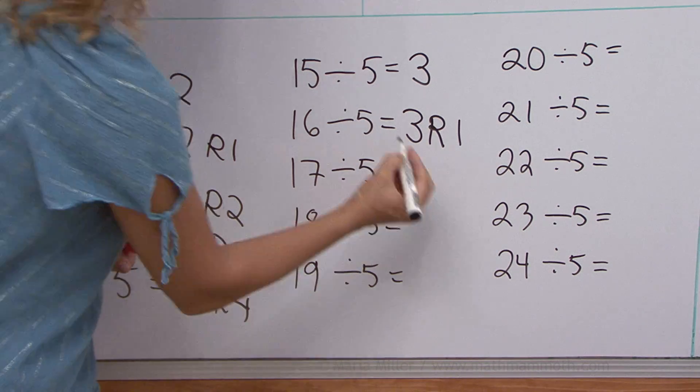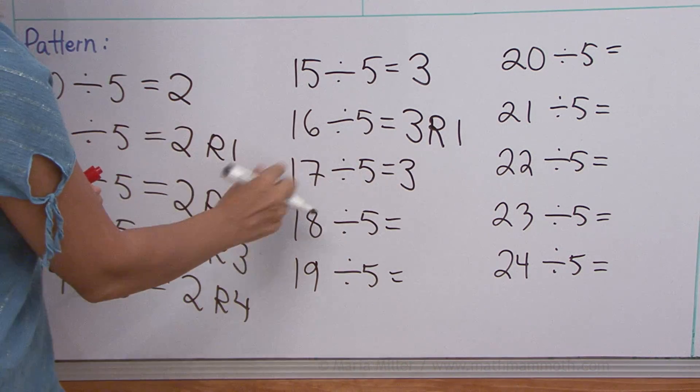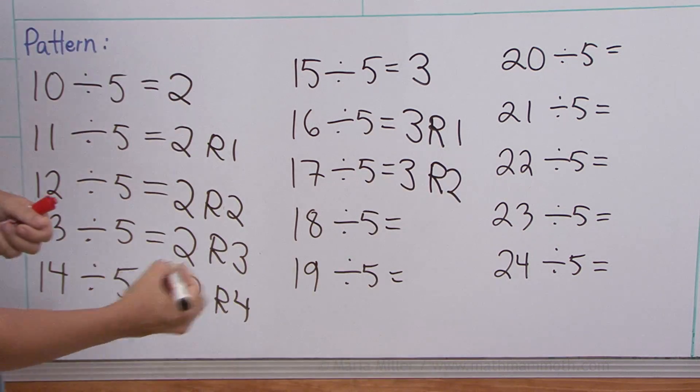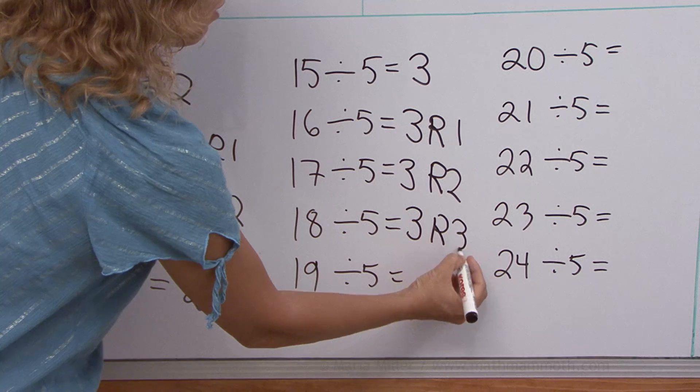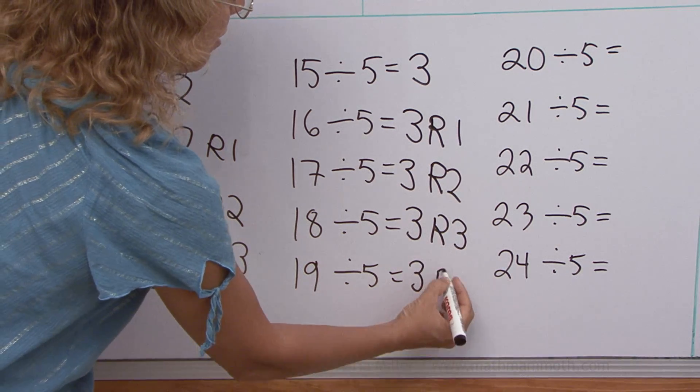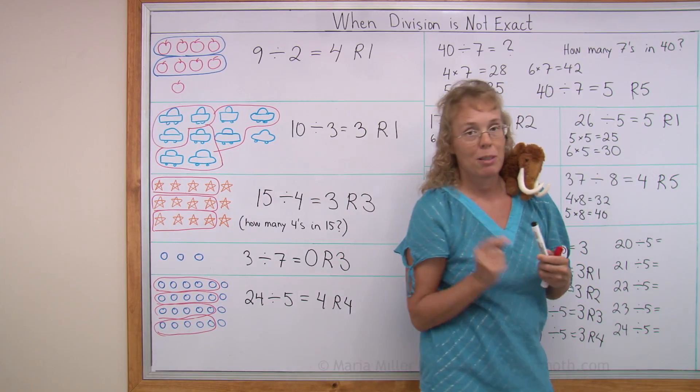How many fives in seventeen? Again, three. But this time, because three times five is fifteen, we get remainder two. You can see the pattern now, right? We get three, remainder three. And three, remainder four.